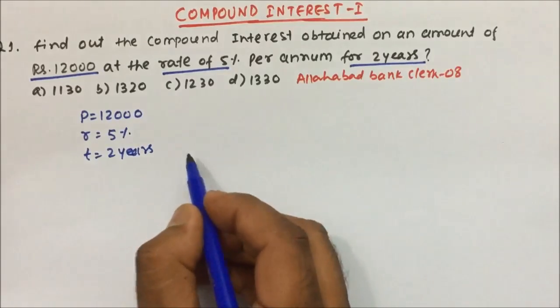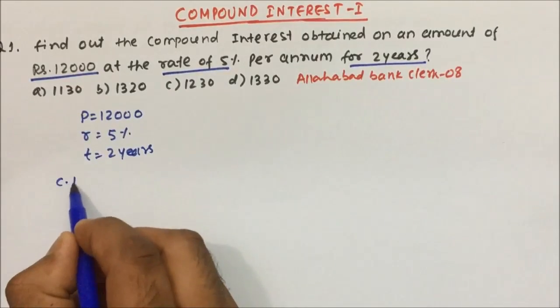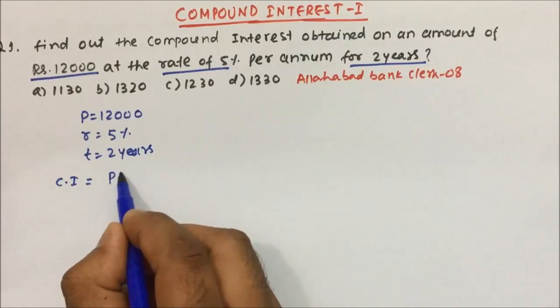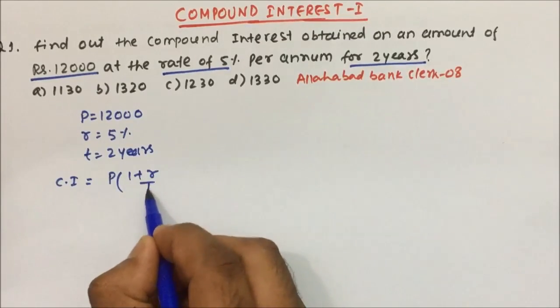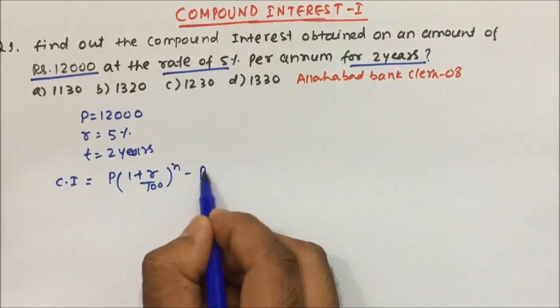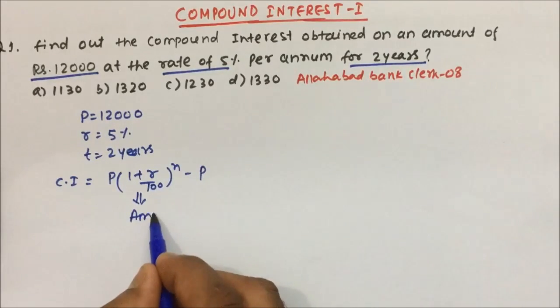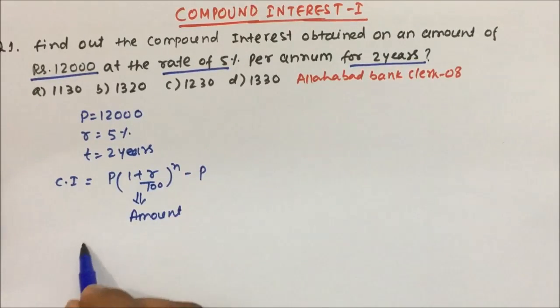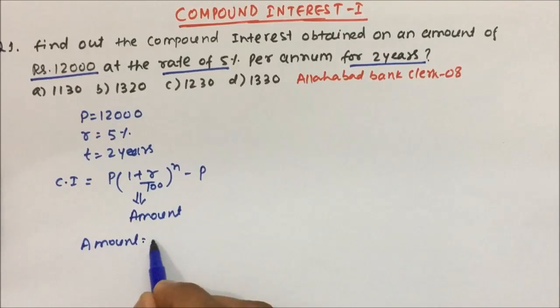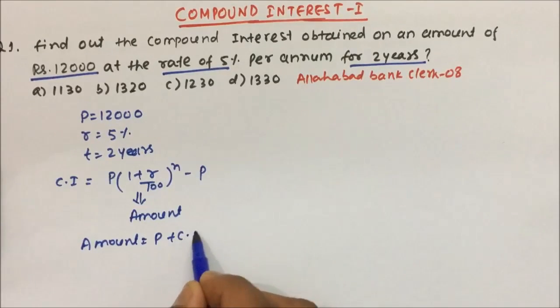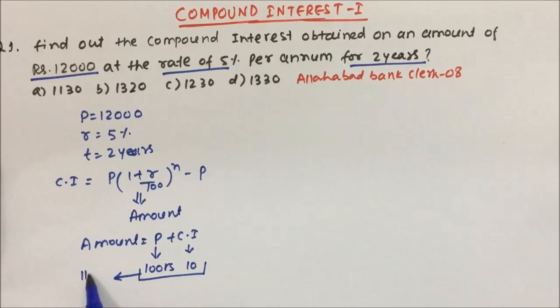Now if you remember, in childhood we had one formula to calculate compound interest. Compound interest equals P into (1 plus R divided by 100) to the power n minus P, where this is also called amount. Amount equals what? Principal plus compound interest, means whatever money you are going to invest, suppose 100 rupees, and you are getting an interest of 10 rupees, so this will add up and bank will give you the total 110 rupees after one year or whatever the time we have invested.